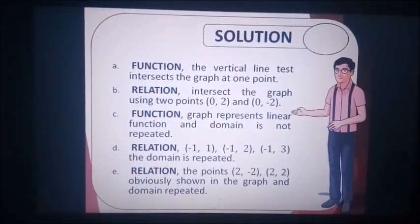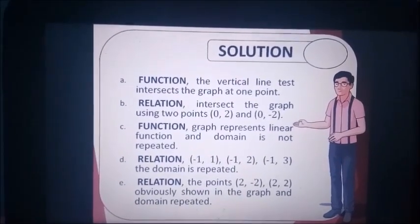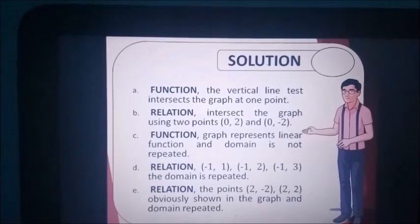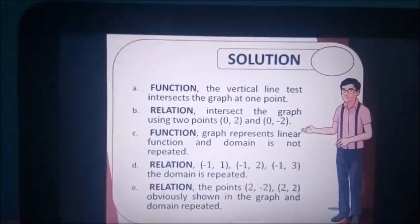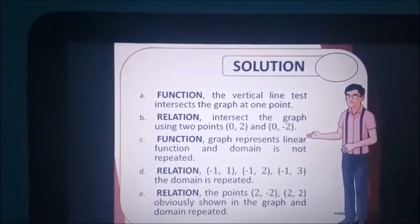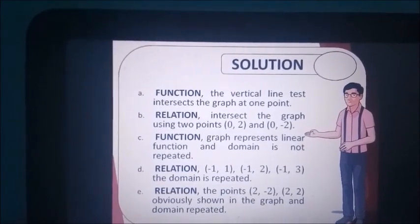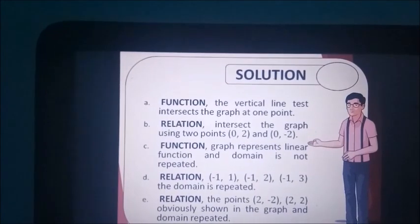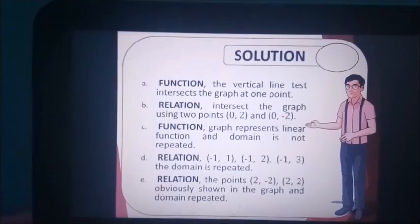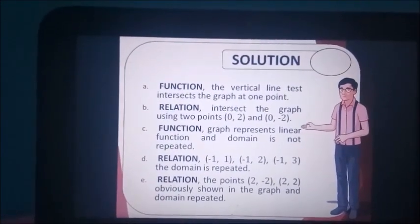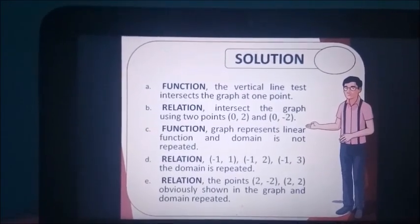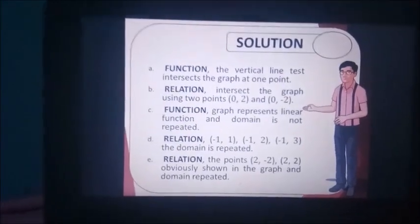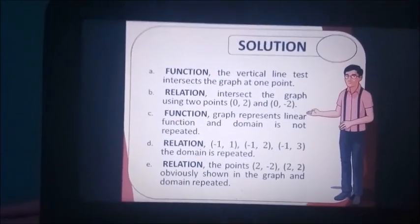In letter A, the first picture, it is a function because the vertical line test intersects the graph at one point. Letter B, it is only a relation, not a function because it intersects the graph at 0, 2 and 0, negative 2. Letter C, function because the graph represents a linear function and the domain is not repeated. Letter D, it is a relation because the domain is repeated. And last, it is also a relation because the points 0, 2 and 2, negative 2 obviously show in the graph and the domain is repeated.